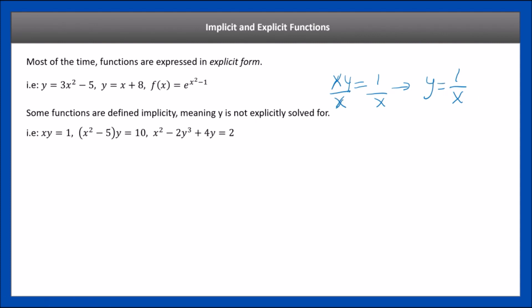That's explicit form. Implicit form is x·y equals 1. Similarly, x squared minus 5 equals something — that needs to be rearranged to solve explicitly. The third one, x squared minus 2y cubed plus 4y equals 2, is very hard to solve for y by itself. So sometimes we leave it in implicit form because it's hard to solve — we keep it that way to simplify things.